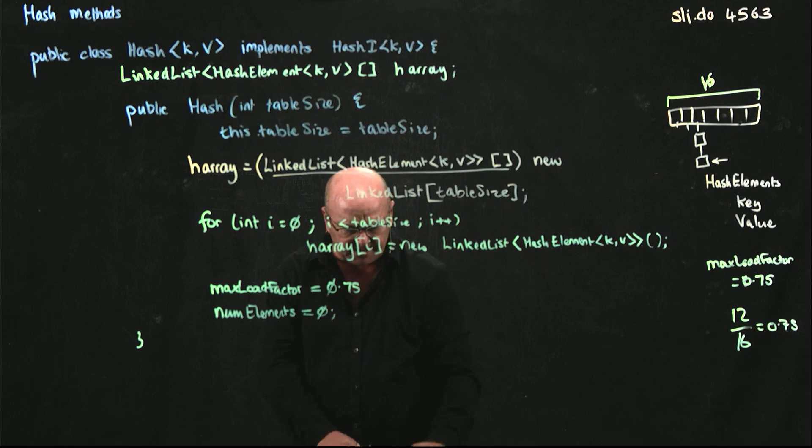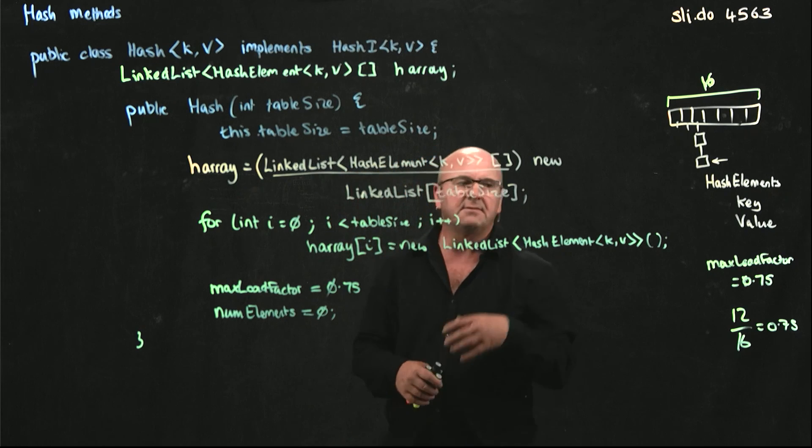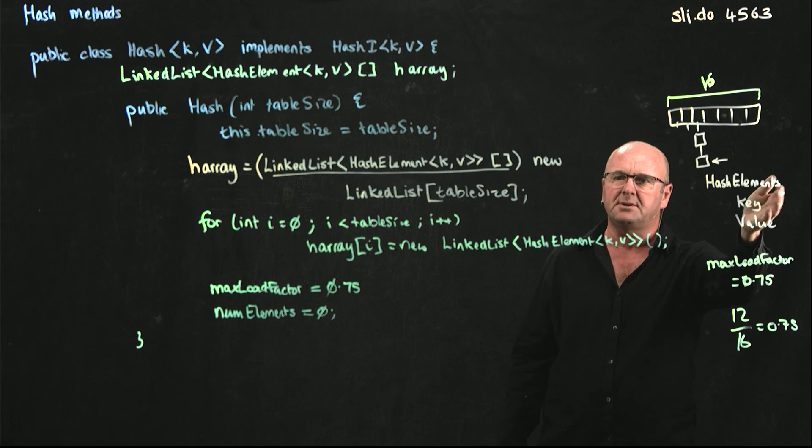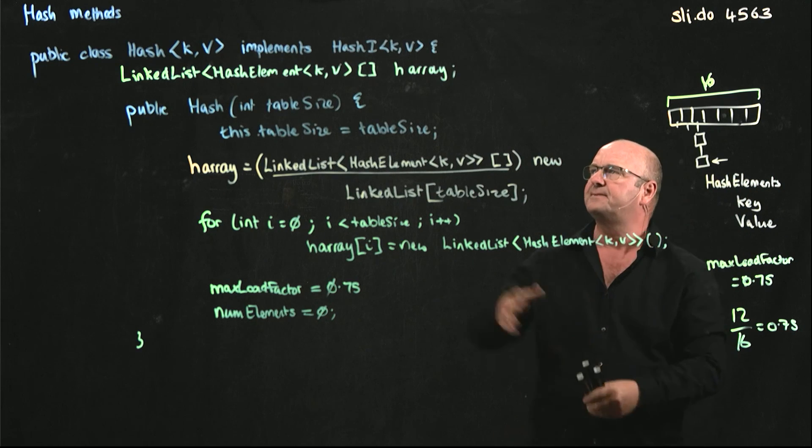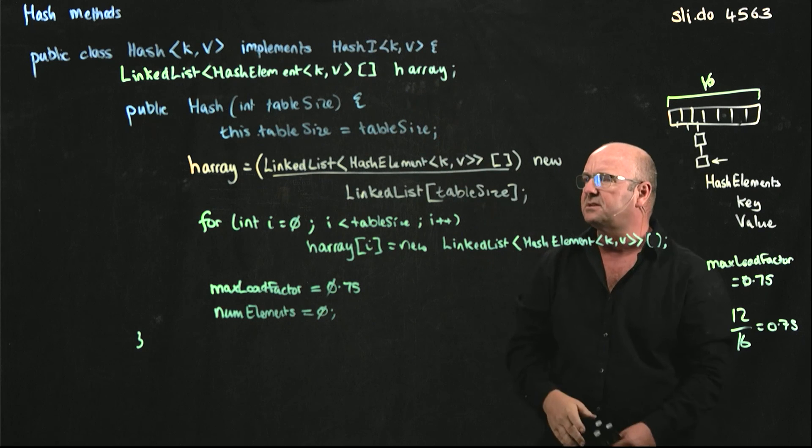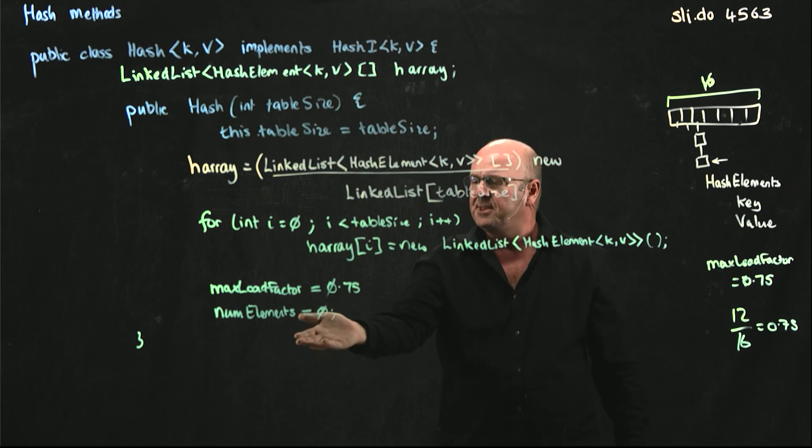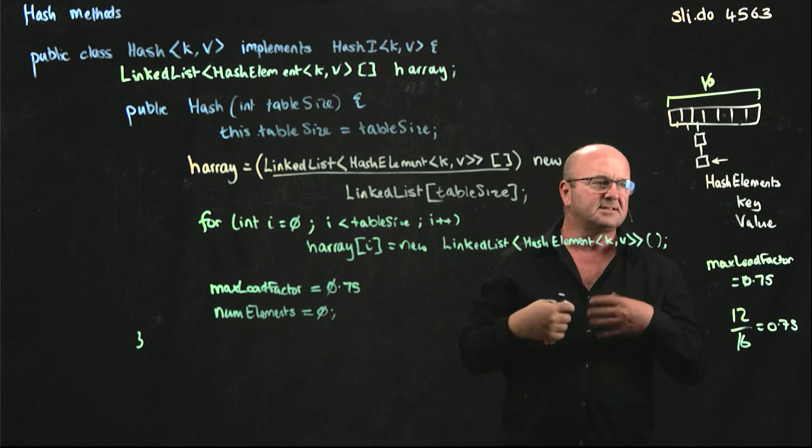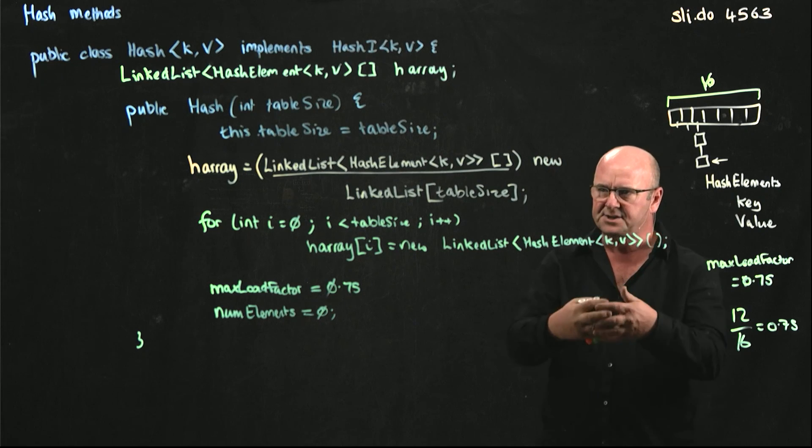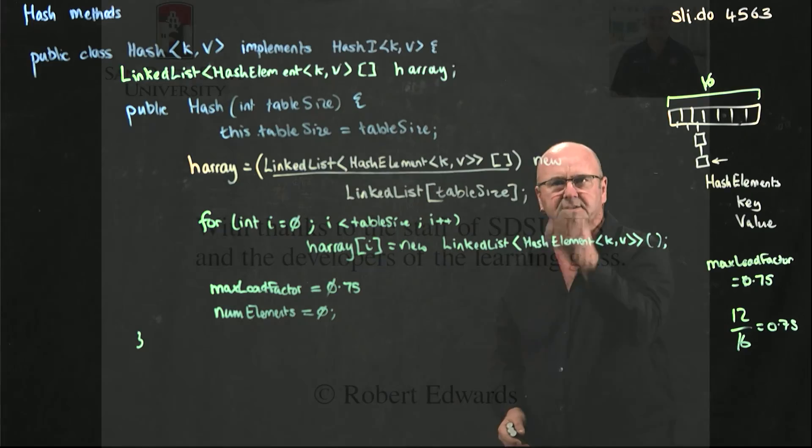So we've constructed our hash. We've got our inner class that's going to hold things, our inner class of hash elements. We've got our globally scoped variable, our list of arrays, our number of elements and so on. And we've got our constructor so that when somebody says they want to use our hash, they call the new hash method and it initiates all of this data.